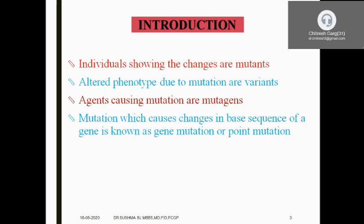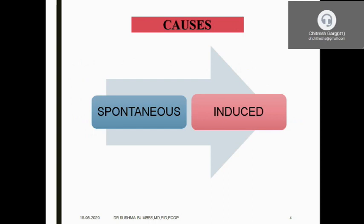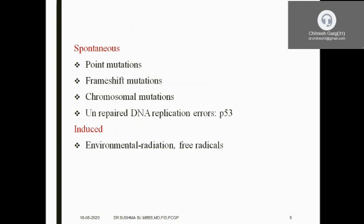These are terminologies one must know. Mutation that causes a change in the base sequence of a gene is known as gene mutation or point mutation. The causes could be spontaneous or induced. Spontaneous causes include point mutations — for example, sickle cell disease — as well as frameshift mutations or chromosomal mutations. Induced mutations include unrepaired DNA replication errors due to defective P53, exposure to UV-A, UV-B, and gamma rays used in cancer treatment, leading to formation of pyrimidine dimers, depurination, depyrimidination, or free radical generation causing DNA damage.